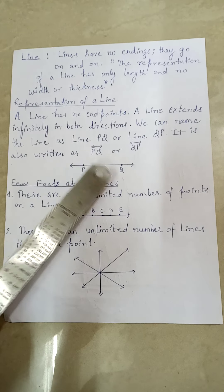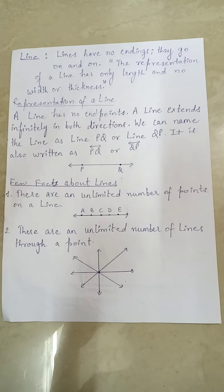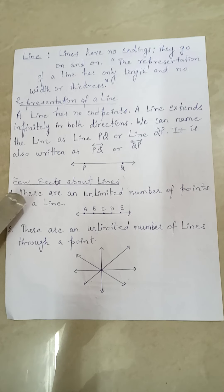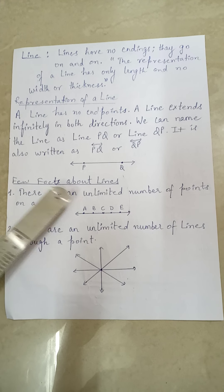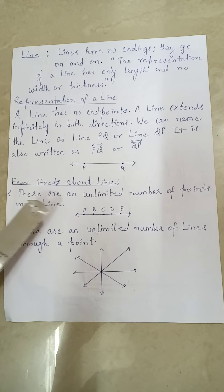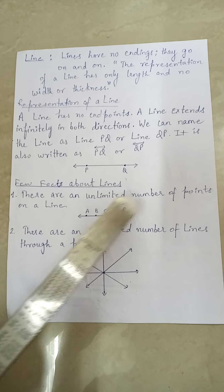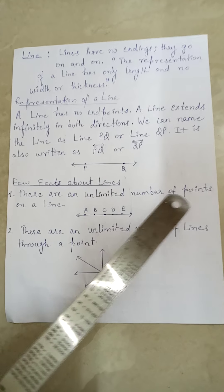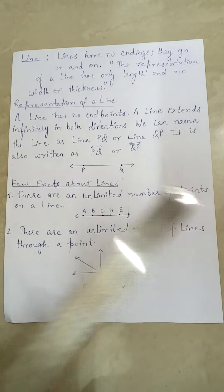This is the symbol for Line PQ and Line QB — this is how we name a line. The next heading is: Few Facts About Lines. First, there are an unlimited number of points on a line. Whenever we draw a line, we can find many points on it, such as A,